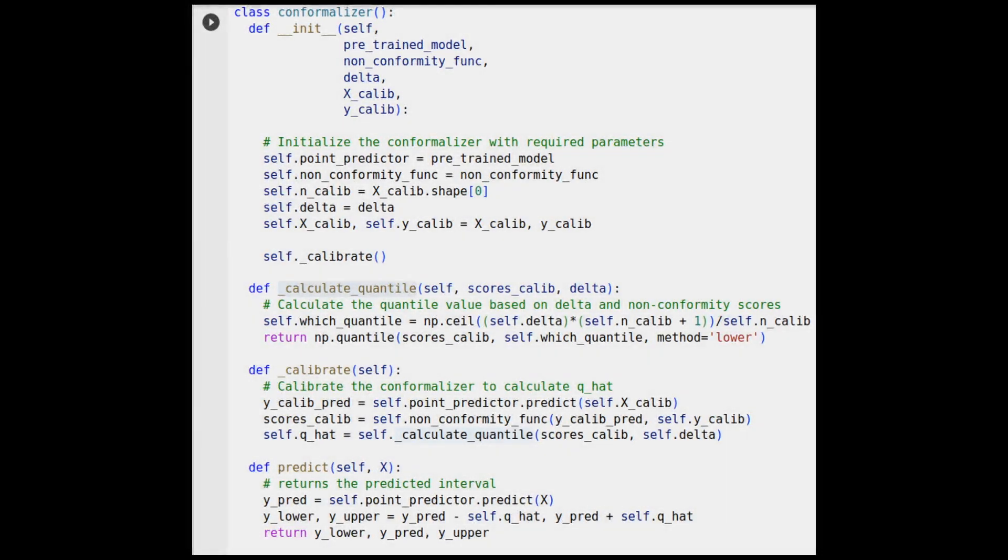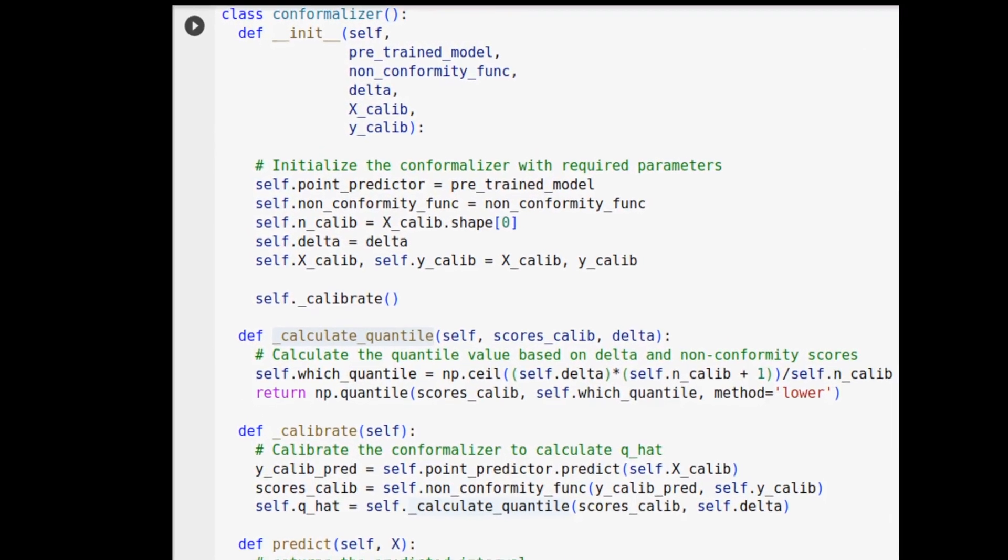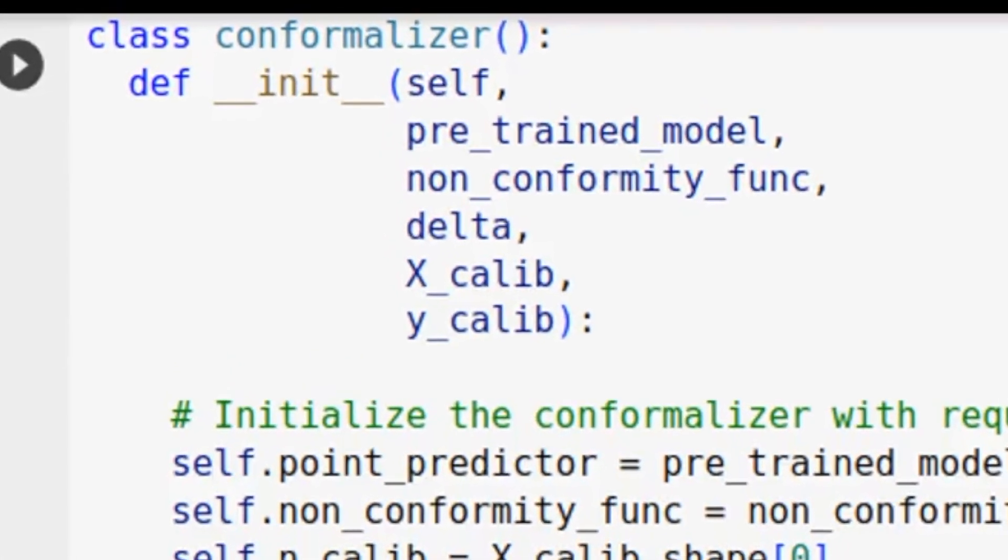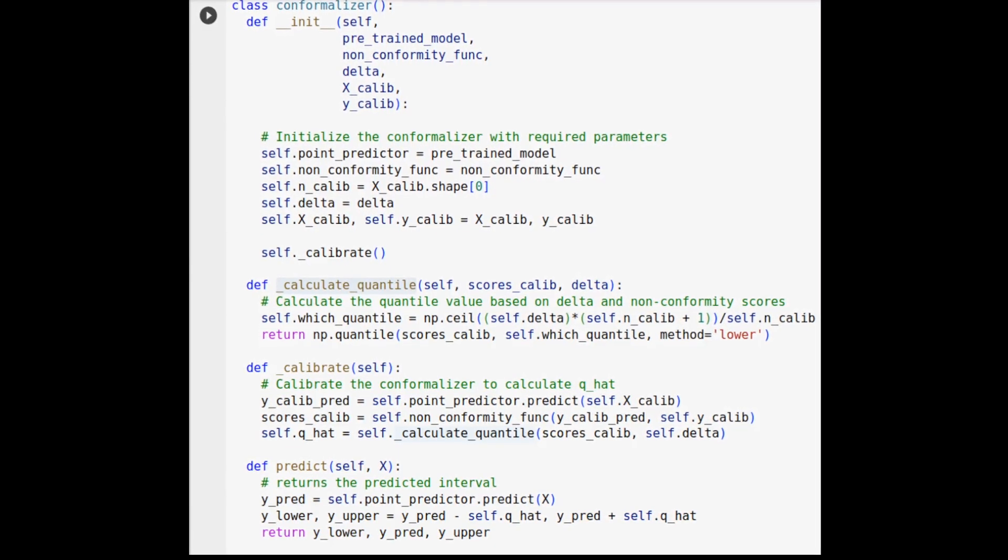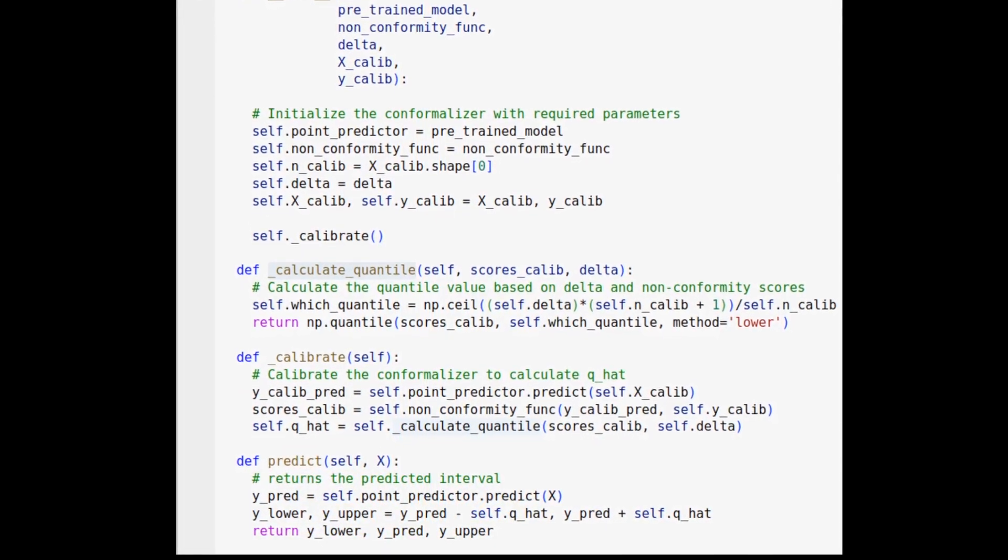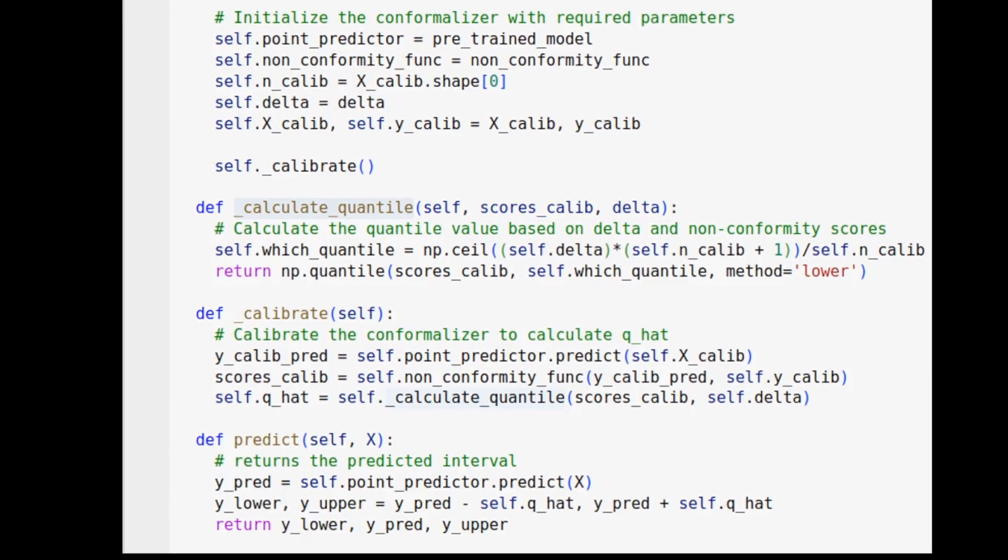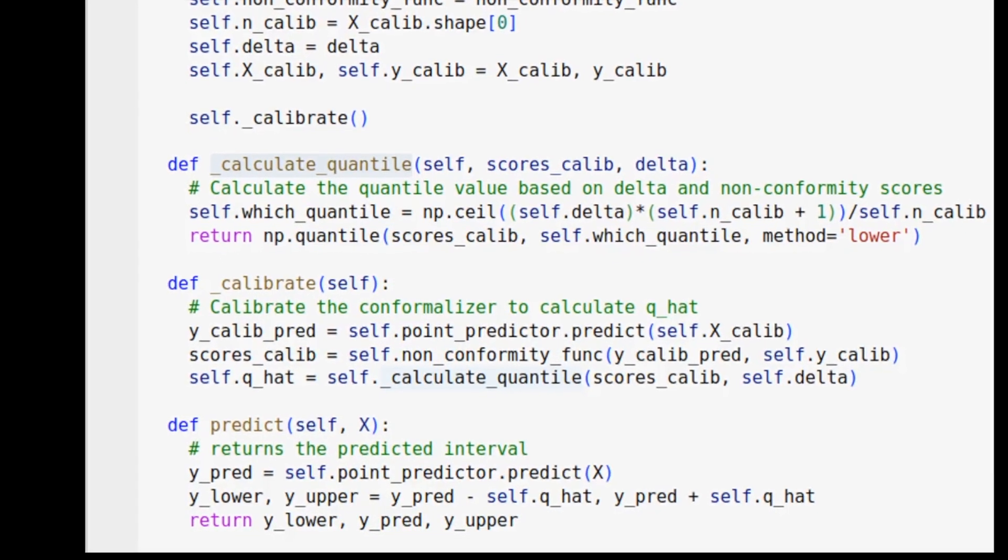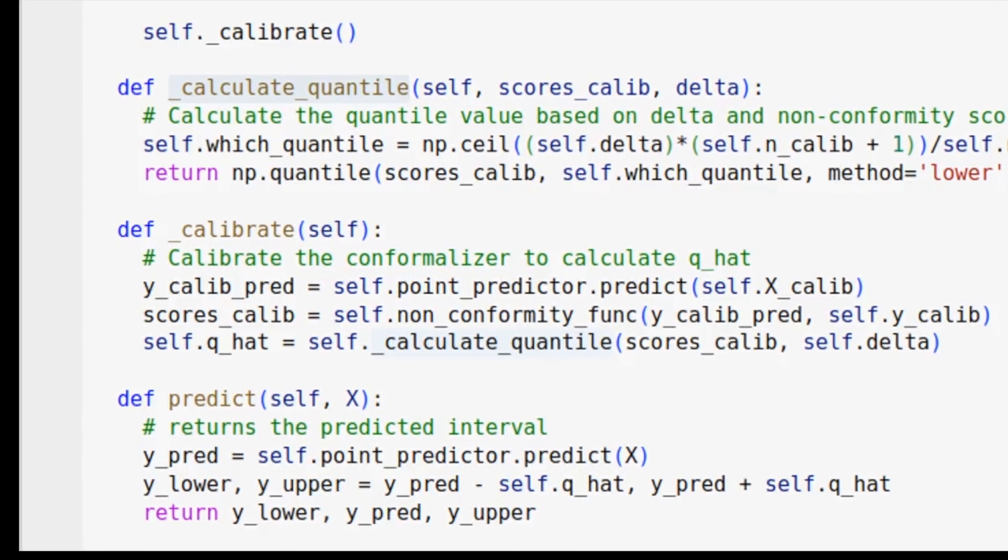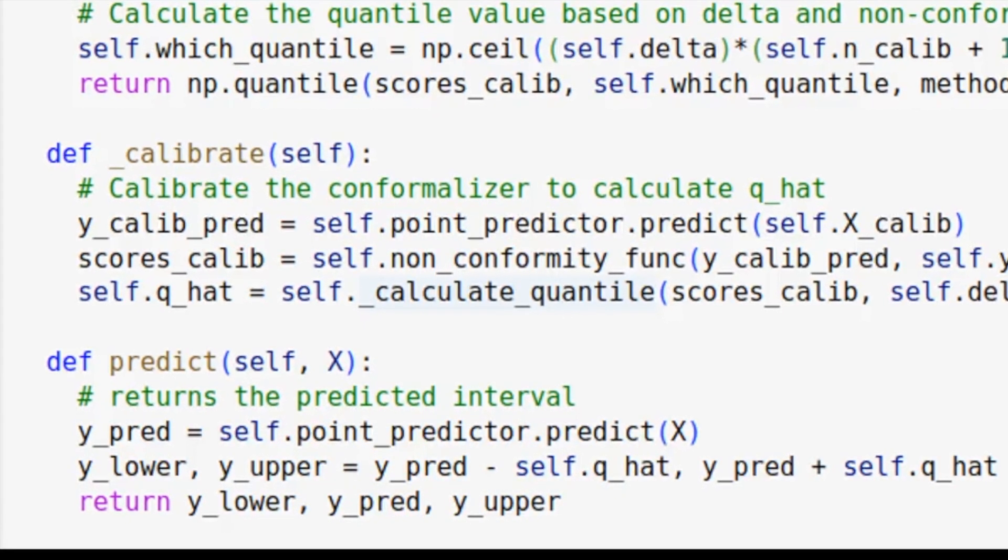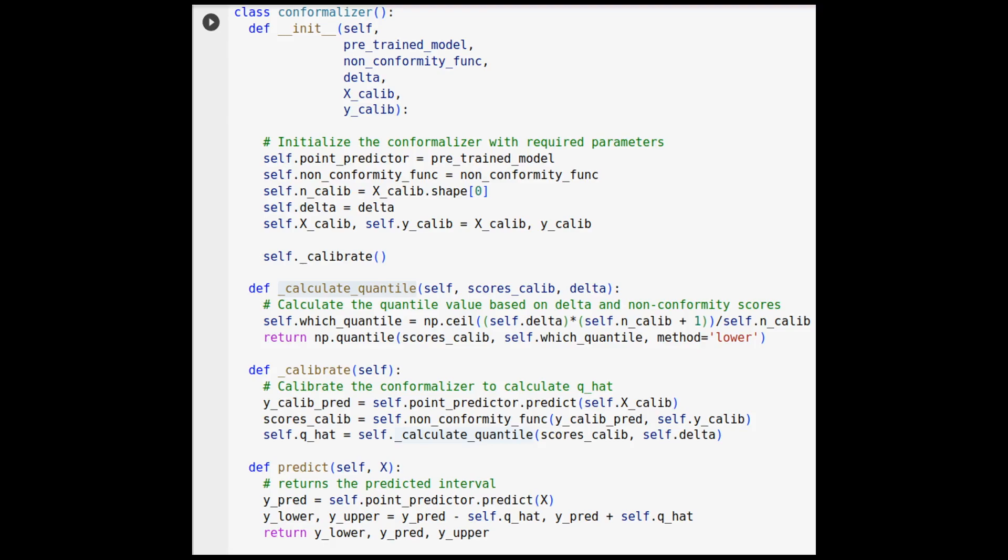Now remember the conformal tool we wanted to build. Let's implement it within a single class called Conformalizer. This Conformalizer class takes as input a pre-trained model, calibration data, and the desired confidence level delta. It provides a dot predict method that not only returns point predictions but also upper and lower bounds of the prediction interval. Essentially what this method does is add and subtract a specific quantile, typically referred to as q hat, from the y hat values just as we discussed earlier.